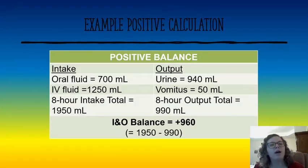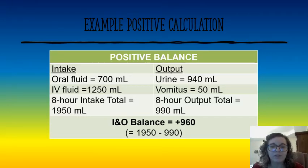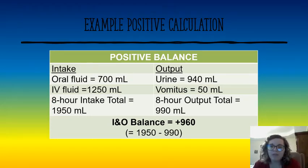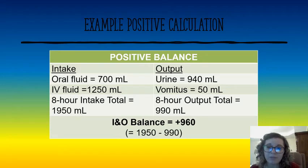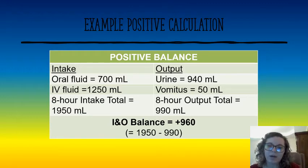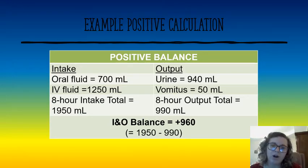Here's an example of a positive calculation: the patient drank 700 mL of fluid and received 1,250 mL through their IV, giving a total intake of 1,950 mL. During the same time frame, they put out 940 mL of urine and vomited 50 mL, for a total output of 990 mL. Their balance is a positive 960 mL — that's 1,950 minus 990.